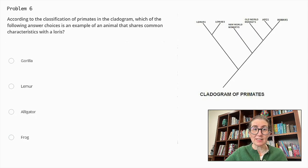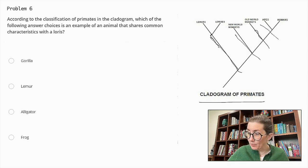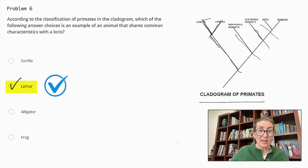According to the classification of primates in the cladogram, which of the following answer choices is an example of an animal that shares common characteristics with a loris? Gorilla, lemur, alligator, or frog? Let's look at the cladogram and we see these various branches and off of the very same branch is lemurs as well as lorises. So the correct answer is lemur. According to the cladogram, lemurs and lorises share a closer common ancestor than the other listed animals.